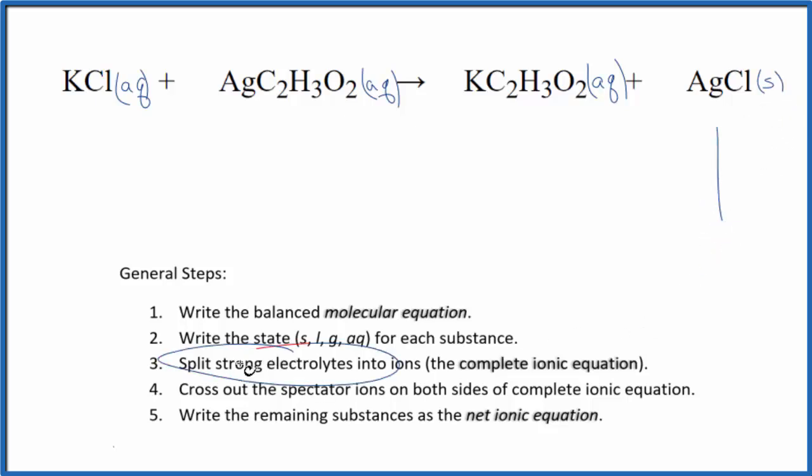Now we can split the strong electrolytes into their ions for the complete ionic equation. So on the periodic table, K, that's potassium. That is a 1+, Cl is 1-, so we end up with K+ plus that chloride ion.